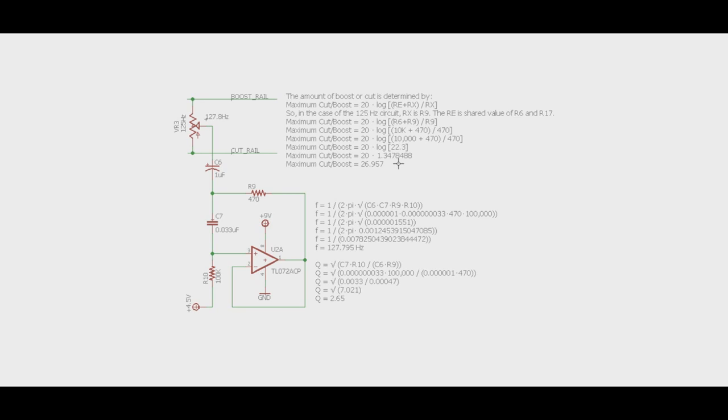Now that we've determined the cut and the boost, now what we want to find out is, well, what frequency are we cutting and boosting? I mean, you can take my word for it that it's 127.8 Hertz, but let's actually do the math. So what you see right down here is the frequency cut, and if you follow this formula out, it's 1 over 2 times pi times the square root of all your components that are in your gyrator circuit here. And if you do all the math, in this case it comes out to being 127.795 Hertz.